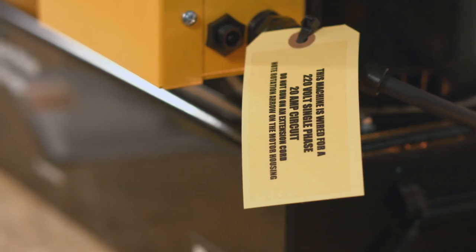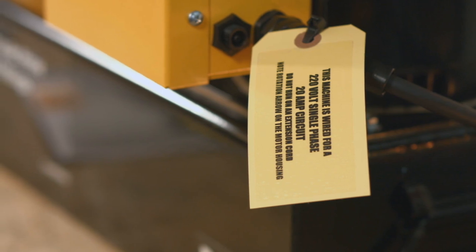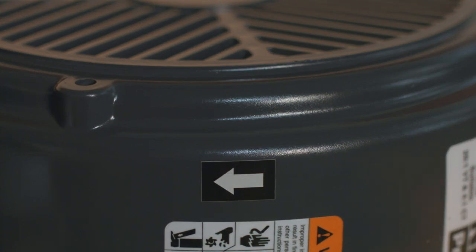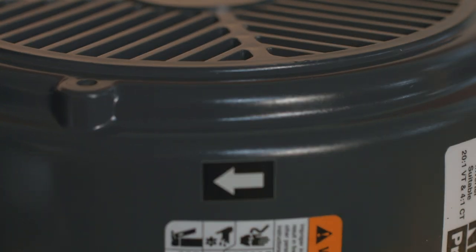Be sure to check the electrical circuit matches the crimper requirements, which can be found on the tag attached to the crimper cord. Ensure that the motor rotates in the direction of the arrow shown on the motor housing.